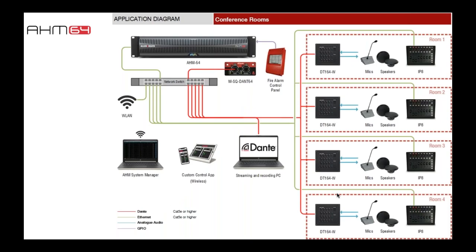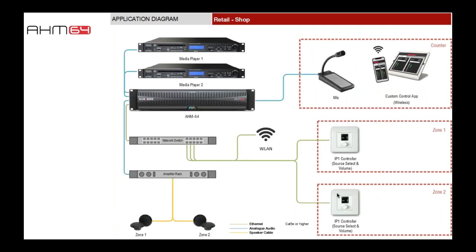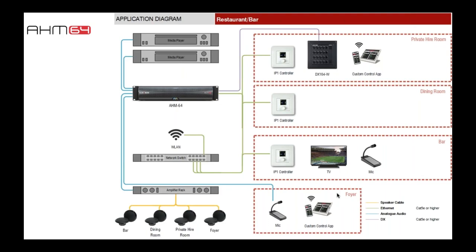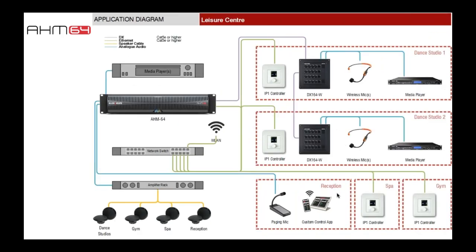Application examples are available on the website. These include a conference and retail system with a paging microphone, Custom Control interface, and IP1 wall plates for level/source selection; a house of worship example; a restaurant or bar with multiple zones and a DX164 for multiple microphones and sources; and a leisure center. If you want to know how AHM64 might fit your specific requirements, get in touch with us directly or with our distribution partners in your country.